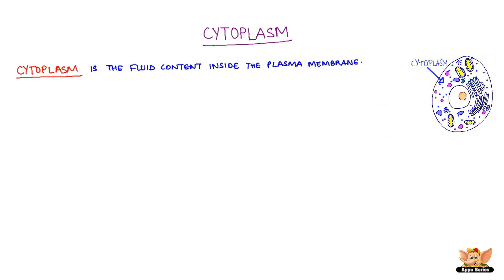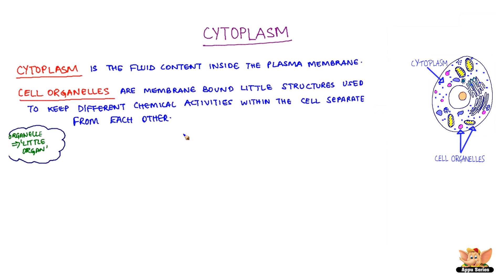Cytoplasm is the fluid contained inside the plasma membrane. It contains many specialized cell organelles. 'Organil' in Latin means little organ. Cell organelles are membrane-bound little structures used to keep different chemical activities within the cell separate from each other. There are many cell organelles, each performing a specific function for the cell. We'll learn more about cell organelles in forthcoming videos.